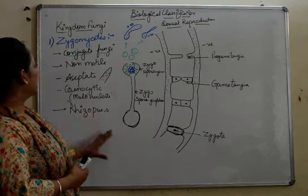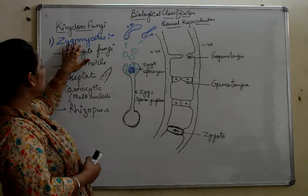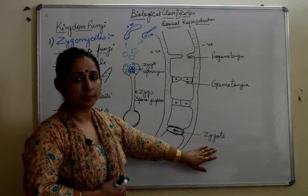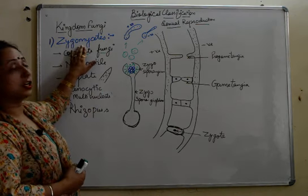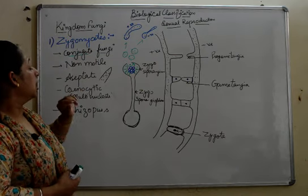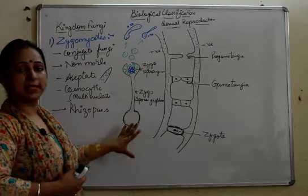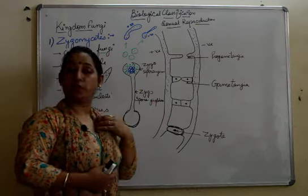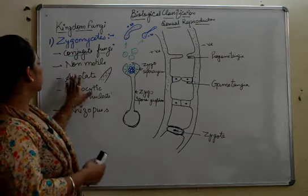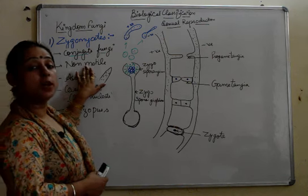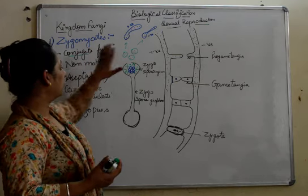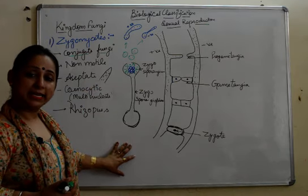This is why the class is known as zygomycetes — because a zygote is formed during this process. Also, in this whole process there is no motile structure formed; there is no flagellate or ciliate structure. Hence, they are non-motile — no structure formed has a flagella or can move. All of them are non-motile in nature.